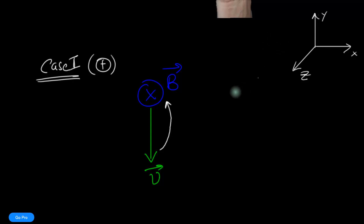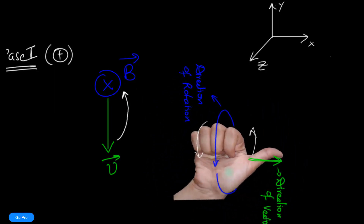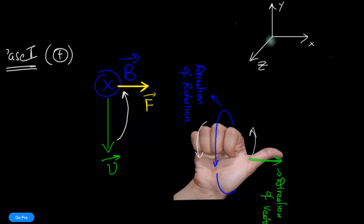This time, to get the right orientation, we take the right hand and orient it so that the direction of rotation lies in the y-z plane. Notice the rotation is exactly what you get going from v crossing towards B, and this tells us the force on the positive charge would be towards the right. Remember, the force is always perpendicular to the plane of rotation.